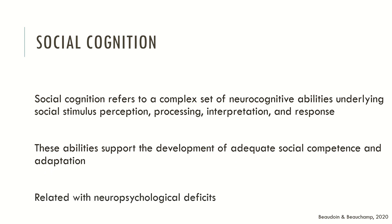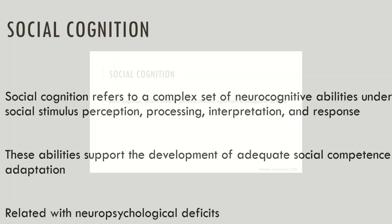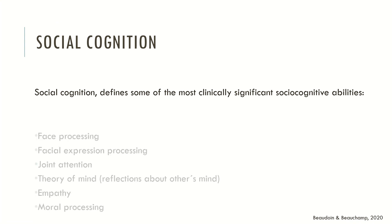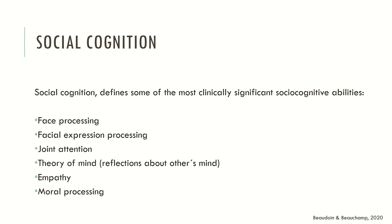Social cognition impairments are typically associated with neuropsychological deficits. Social cognition defines some of the most clinically significant social cognitive abilities: face processing, facial expression processing, joint attention, theory of mind — which implies reflections about the other's mind — empathy and moral processing.